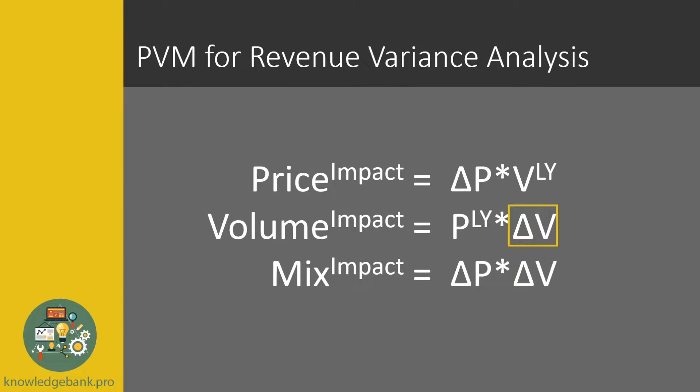For volume impact we multiply the prior year price by the change in volume, and then we define the mix impact as the difference in price multiplied by the difference in volume.